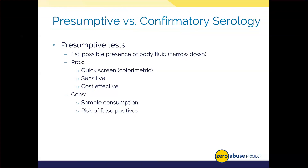Conversely, a false negative means the sample comes across as not having a body fluid when it actually does possess serological material. Many items, such as vegetable enzymes, have been demonstrated to potentially scramble a presumptive blood test, leading to a positive result when a body fluid isn't present. Because of false positives and negatives, we cannot definitively say a given stain is a particular body fluid, and we need to confirm it in a second round of serology-based testing.